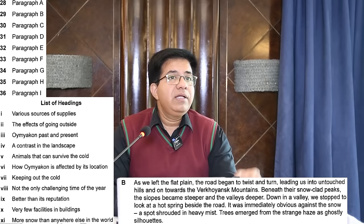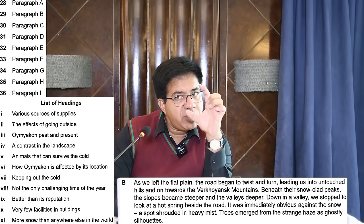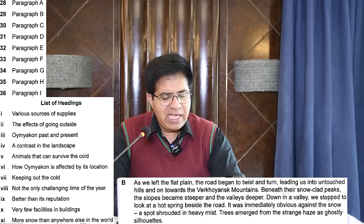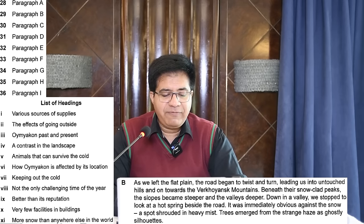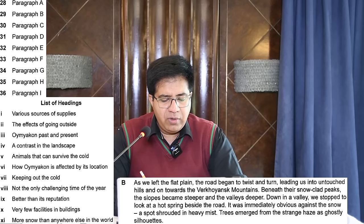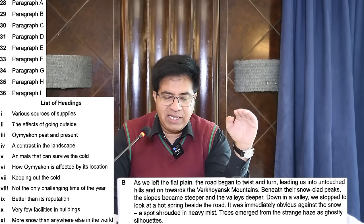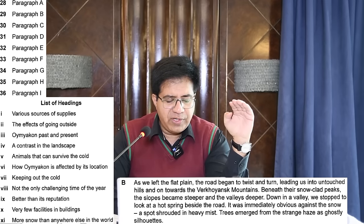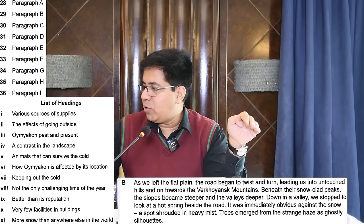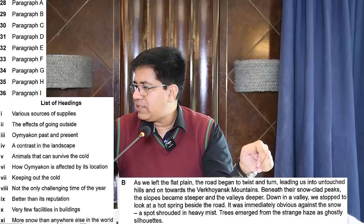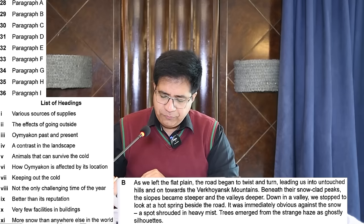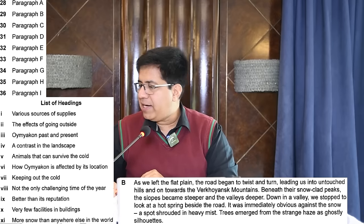One more thing: whenever you start list of headings, try to start with the shortest paragraph first, then the second shortest, then work towards the longer ones. Paragraph B: 'As we left the flat plane' — underline flat plane — 'the road began to twist and turn' — underline twist and turn — 'leading us into untouched hills' — underline hills — 'and on towards the mountains.' Flat planes, twist and turn, hills — what is it? Contrast in the landscape. Correct answer is heading four.